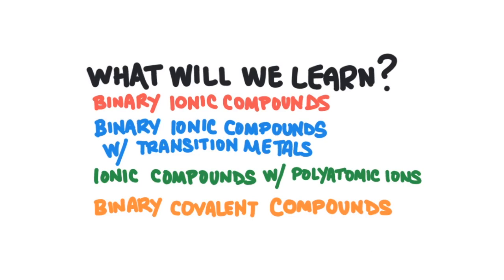So what are we going to learn in this lesson? First we will learn how to name binary ionic compounds, then we'll learn how to name binary ionic compounds with transition metals, then we'll learn about ionic compounds with polyatomic ions, and finally we'll learn how to name binary covalent compounds.